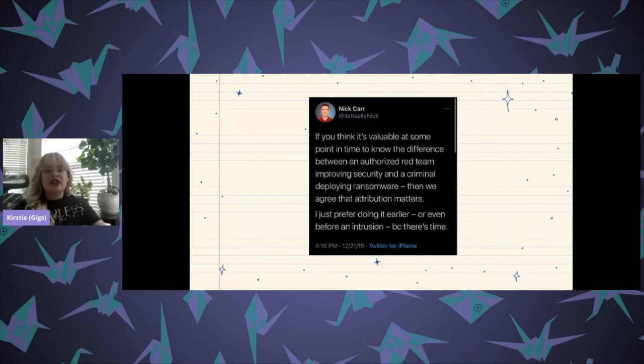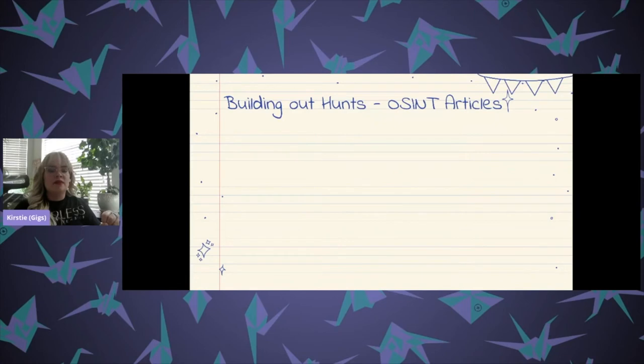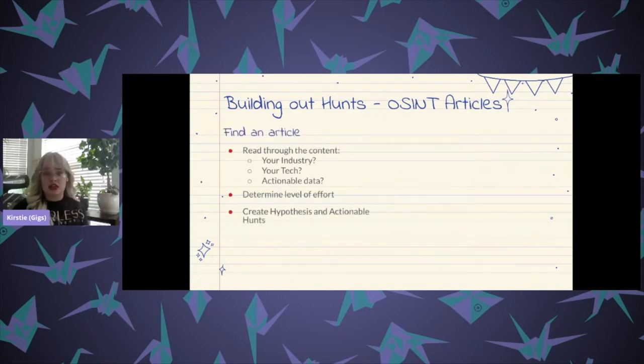Now, understanding threat groups and what they target can help you address business risk. So as you're reading through your threat blogs, identify if your organization is even a target of these campaigns. It will help you define the level of effort you're going to throw behind creating your hunts. Basically, do you even have the technology that just disclosed a vulnerability that is being actively exploited, or maybe you have customers or partners that could be impacted by this new campaign, right? That might open up your organization to additional risk.